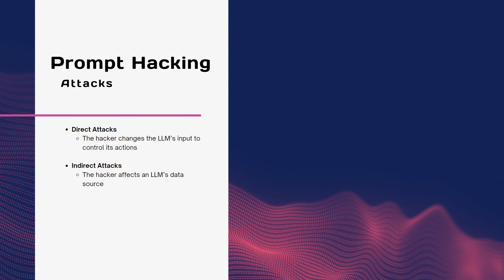The second type is called an indirect attack. In an indirect attack, the hacker does not target the LLM directly but rather its data source. The hacker can affect the data source by tampering with it, deleting it, or injecting false or misleading information. This can degrade the quality and reliability of the LLM's output or cause it to produce harmful or inappropriate content. Both direct and indirect attacks are serious threats to the LLM's integrity, performance and trustworthiness, so it is important to implement effective security measures.